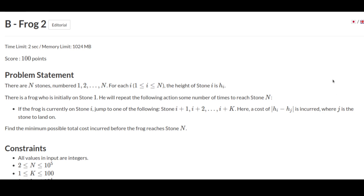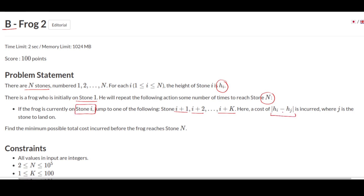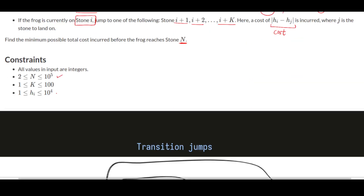Hello and welcome back. This is problem B, Frog 2, from AtCoder's educational DP contest. The problem states that there are n stones numbered from 1 to n. For each i, the ith stone has height h of i. There is a frog who is initially on stone 1 and will repeat the following action to reach the nth stone. The frog can jump from stone i to i+1, i+2, all the way up to i+k, and the cost incurred is the absolute difference between the heights of the jumped stones. We need to find the minimum possible total cost until the frog reaches the nth stone.